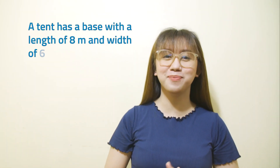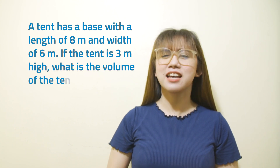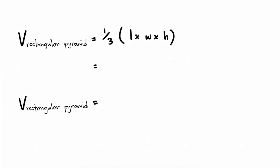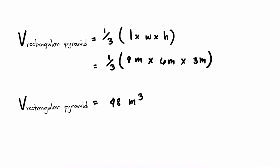A tent has a base with a length of 8 meters and a width of 6 meters. If the tent is 3 meters high, what is the volume of the tent? Using the formula for the volume of a rectangular pyramid: one-third times length times width times height. Substituting: one-third times 8 meters times 6 meters times 3 meters. Therefore, the volume of the tent is 48 cubic meters.